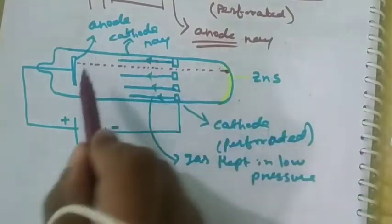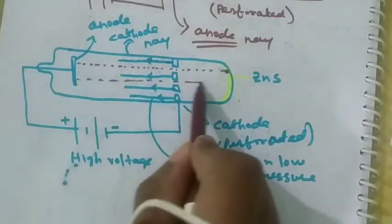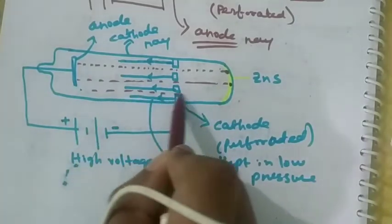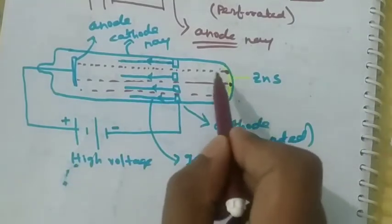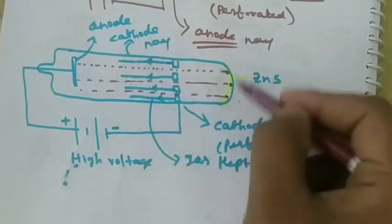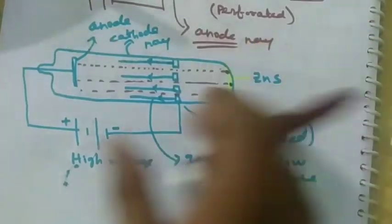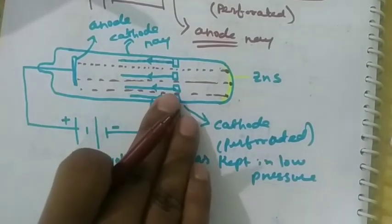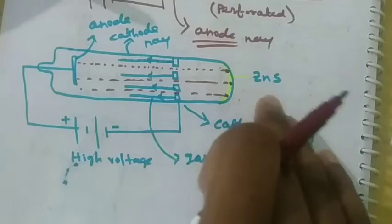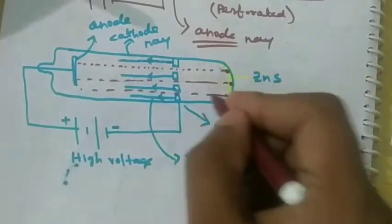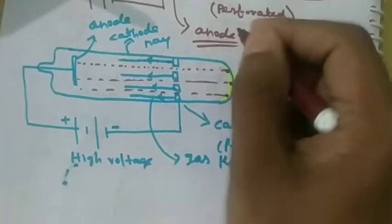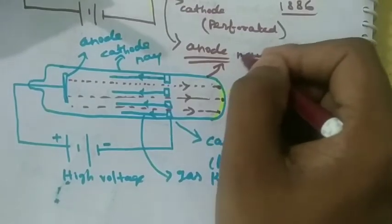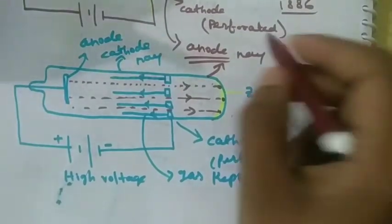There is a fluorescent material on the glass wall which glows when struck by these rays — we have to black out the tube to see the glow. If you want to see the glow, the glow appears. This ray traveling from the cathode toward the anode direction is the invisible ray, and this invisible ray is called the anode ray.